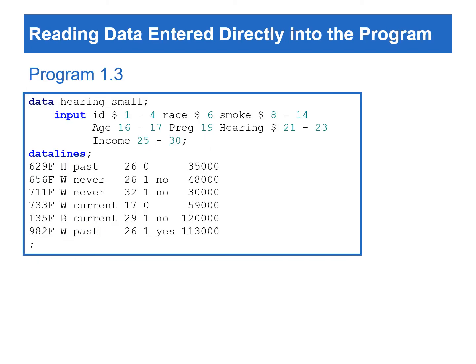For a dataset with a small number of observations and variables, we can enter the data directly into the data step by using the datalines statement. When reading data directly from the data step, we need to place the datalines statement as the last statement of the data step, and enter the data immediately after the datalines statement. In the end, we need to write a single semicolon, which is the null statement, to indicate the end of the input data.